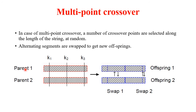Consider this example with parent 1 and parent 2, where three crossover points are selected. The alternating segments are swapped between parents. Offspring 1 has the first part from parent 1, the second part from parent 2, the third part from parent 1, and the fourth part from parent 2. Offspring 2 has the reverse: first from parent 2, second from parent 1, third from parent 2, and fourth from parent 1.